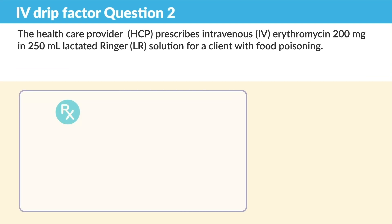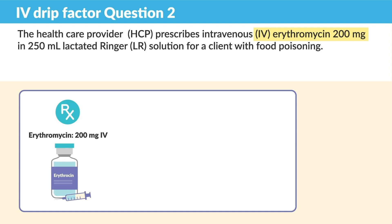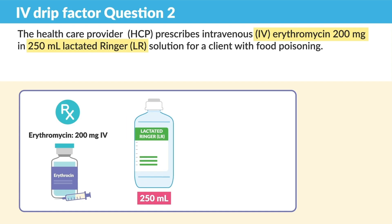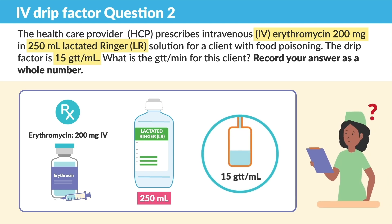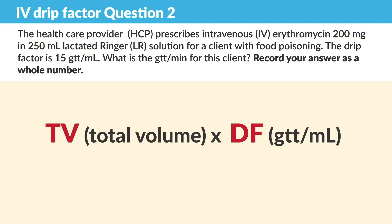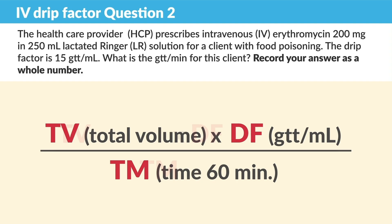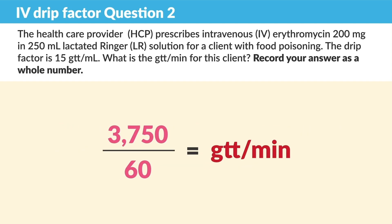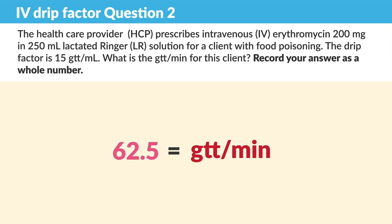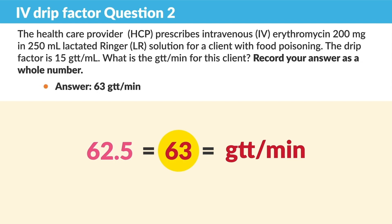Question number two: the healthcare provider prescribes IV erythromycin, an antibiotic, 200 milligrams in 250 mLs of LR — lactated ringers — for food poisoning. The drip factor is 15. What is the drips per minute? Let's set up the formula: TV makes you deaf over time. So 250 for total volume, 15 for the drips, over 60. Always remember it's 60 minutes. When we multiply the top row we get 3,750 divided by 60. Our total is 62.5, but we have to round up because we can't give half of a drop. So the answer is 63 drips or drops per minute.